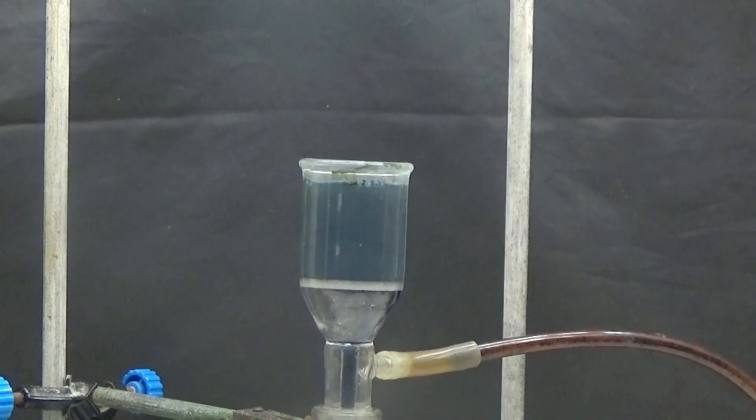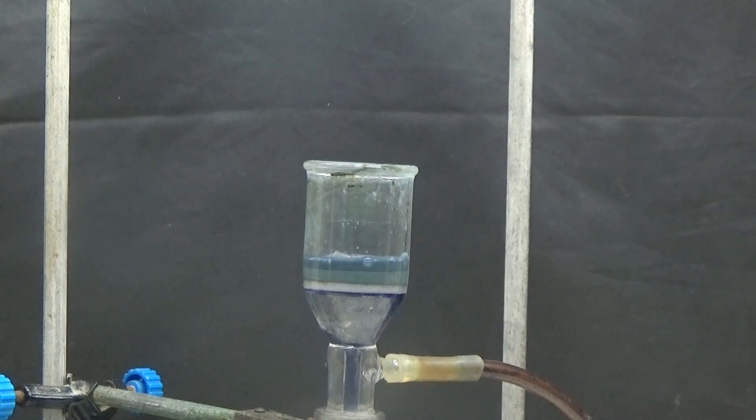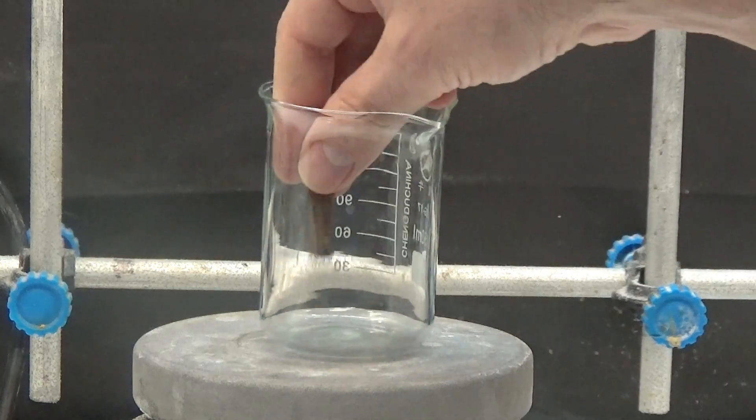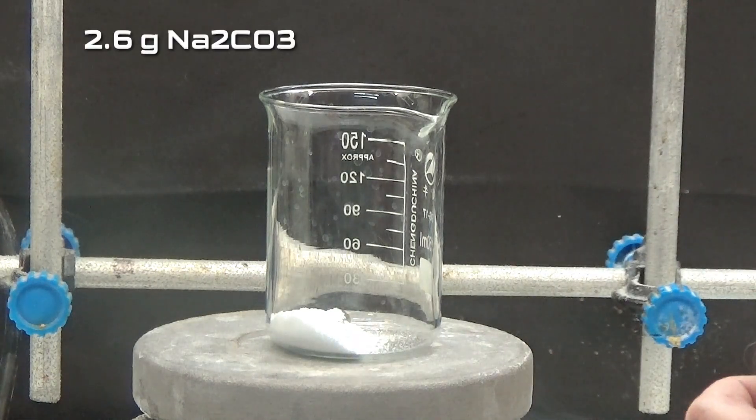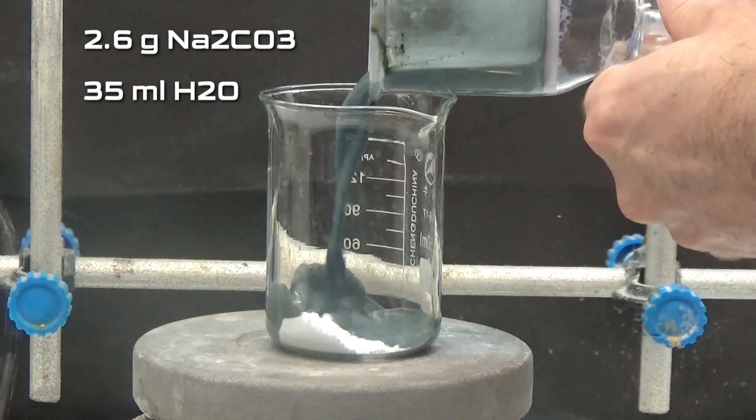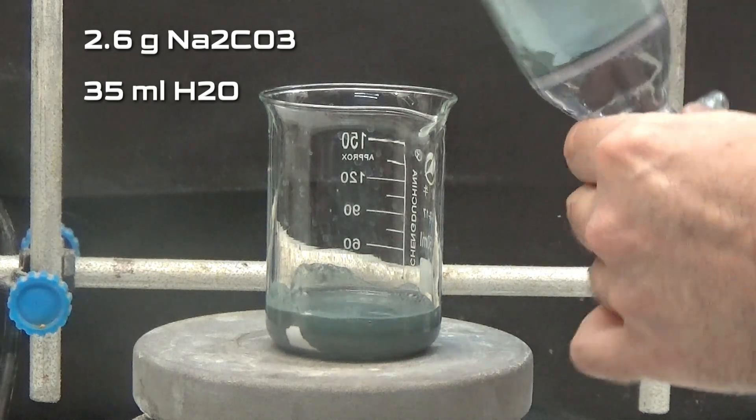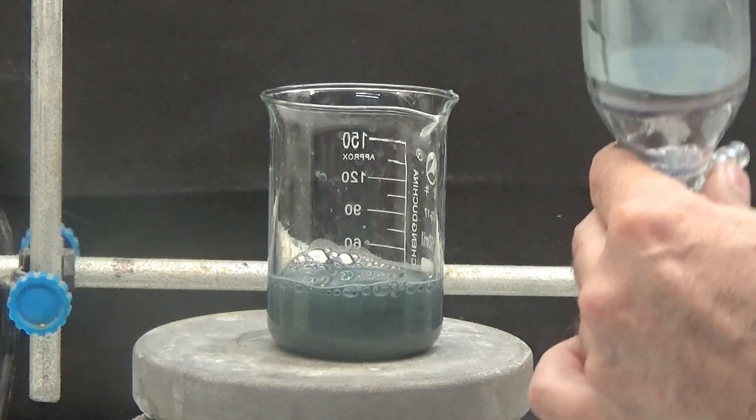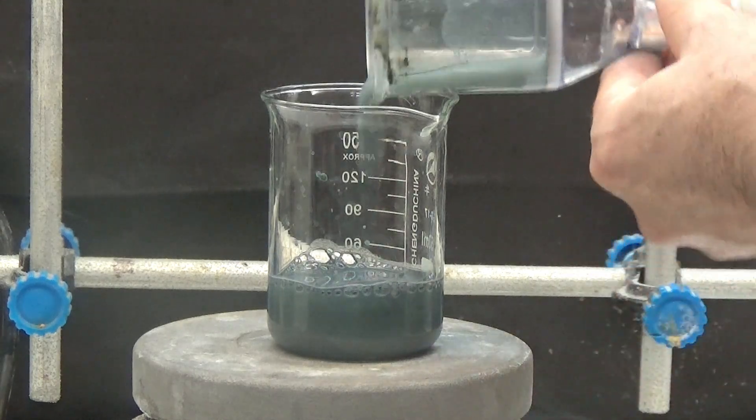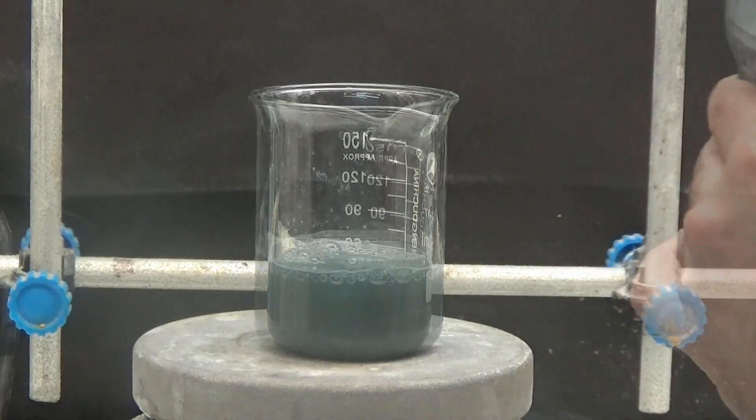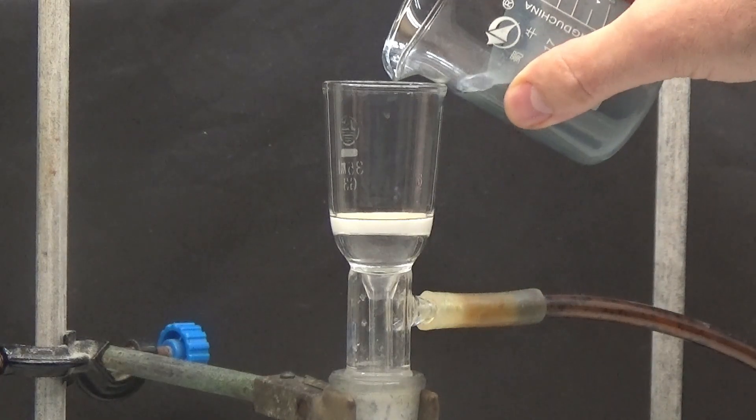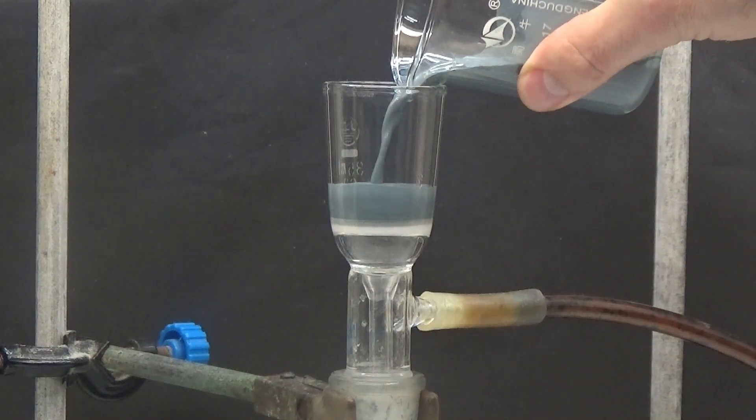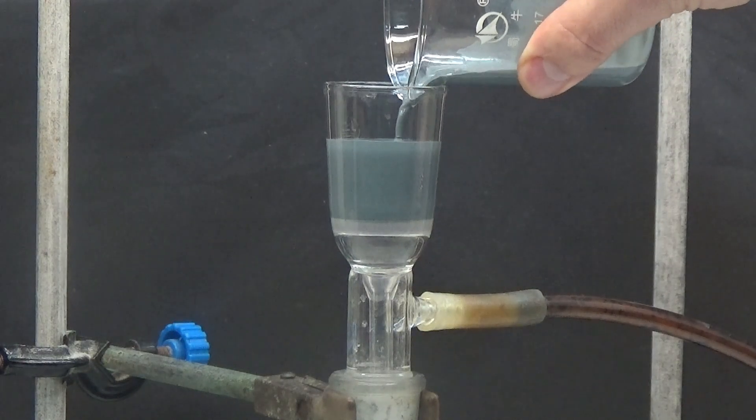Once cold, the precipitate is collected again by suction. The cake is dispersed in a solution of 2.6 grams of sodium carbonate diluted in 35 milliliters of water. This is done to remove the unreacted phenylanthranilic acid. The unreacted acid forms a water-soluble salt with the carbonate that passes through the filter.